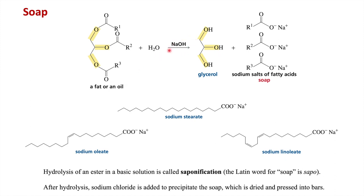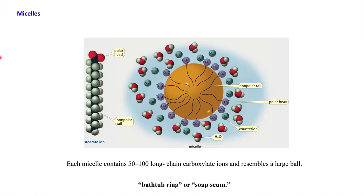Now we come to soap. If you perform hydrolysis of fat or oil in the presence of a base, you get the alcohol part (glycerol) and the fatty acid component. Adding sodium chloride produces the sodium salt of the fatty acid — it can also be a potassium salt. This sodium or potassium salt of a fatty acid is known as soap. Examples include sodium stearate, sodium oleate, and sodium linoleate. This hydrolysis of the ester bond in basic solution is called saponification.